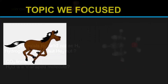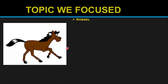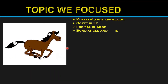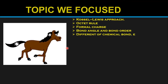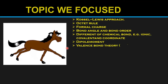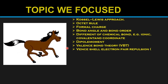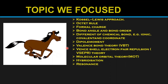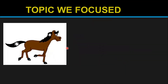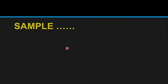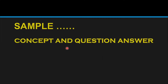I have planned the chemical bonding topics in different sections. First, I will start with the Lewis approach; then we will discuss the octet rule, formal charge, bond angle, bond order, and different types of chemical bonds — ionic, covalent, coordinate bond, and dipole moment. Three important theories will also be covered: VB theory (valence bond theory), VSEPR theory (valence shell electron pair repulsion theory), and MOT (molecular orbital theory). At the end of each topic I will give important questions with answers.